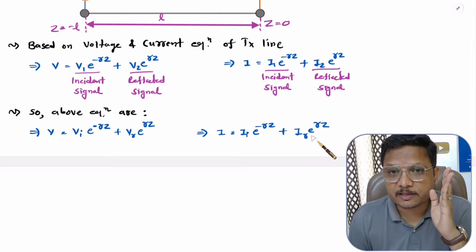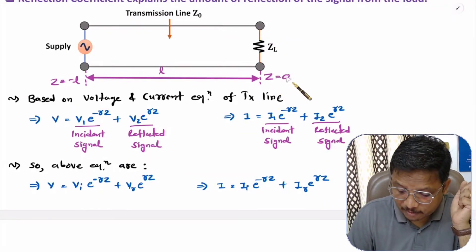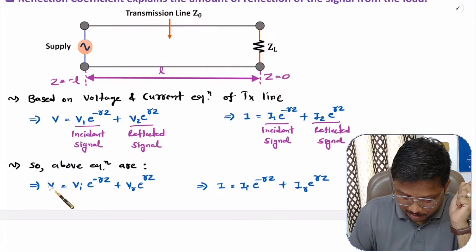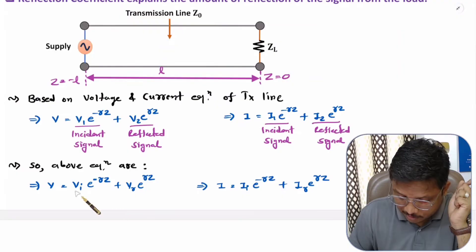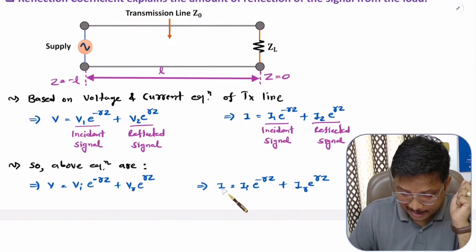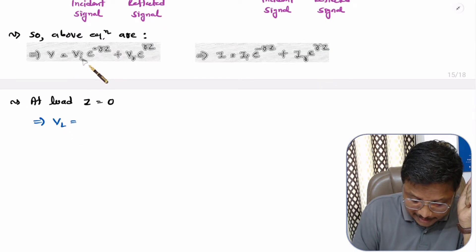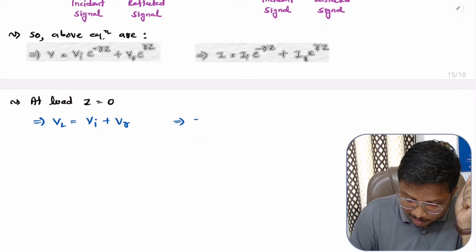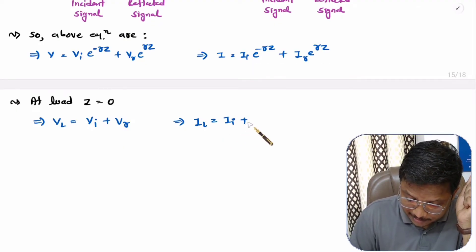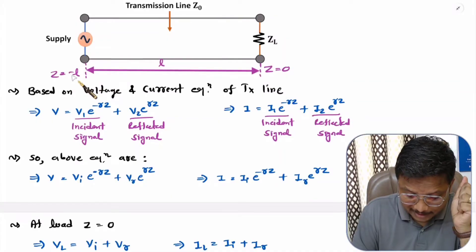Using these two equations, I'll note down standard notations with respect to the load and the source. At the load side, z equals zero, and we will have load voltage VL and load current IL. Substituting z equals zero, the exponential terms become e to the power zero, which equals one. So VL equals Vi plus Vr, and the load current IL equals Ii plus Ir.